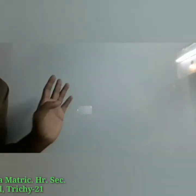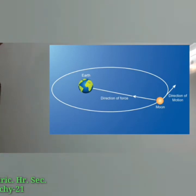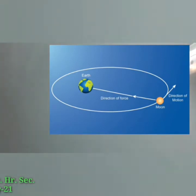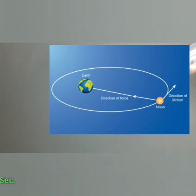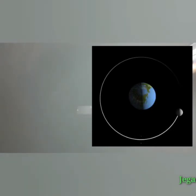Let us take case two: force and motion not in the same direction. For example, the moon experiences a force towards the earth, but it actually moves in an elliptical orbit.